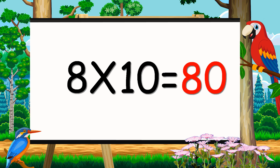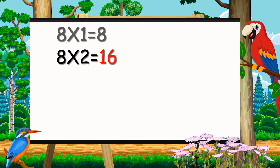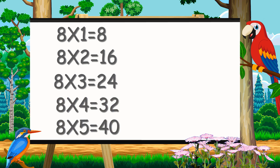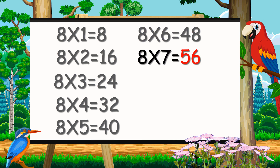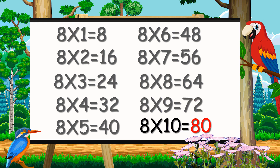8 ones are 8, 8 twos are 16, 8 threes are 24, 8 fours are 32, 8 fives are 40, 8 sixes are 48, 8 sevens are 56, 8 eights are 64, 8 nines are 72, 8 tens are 80.